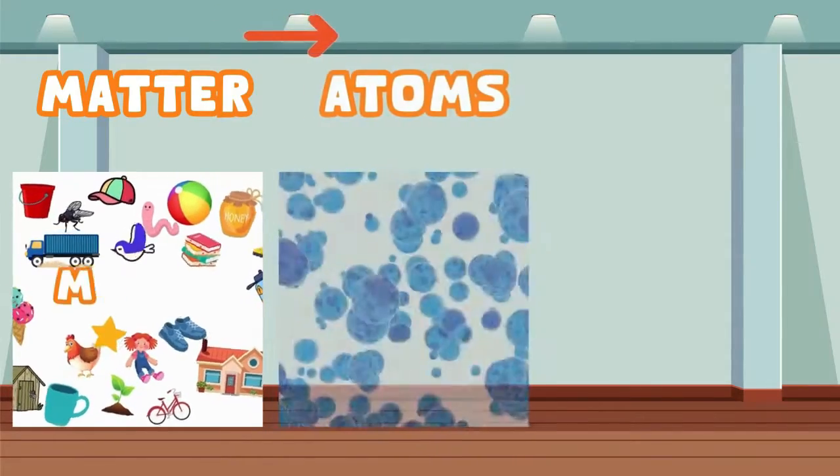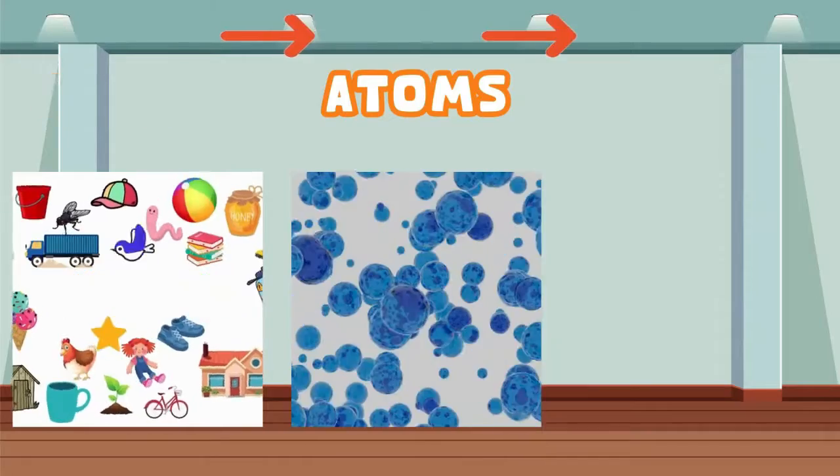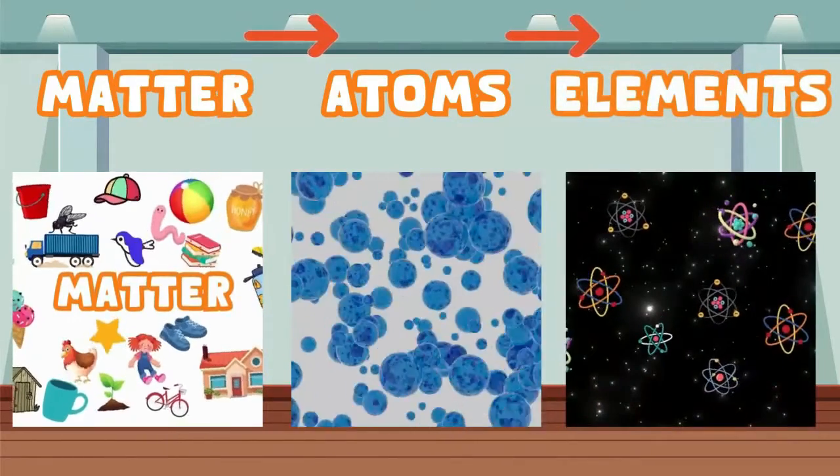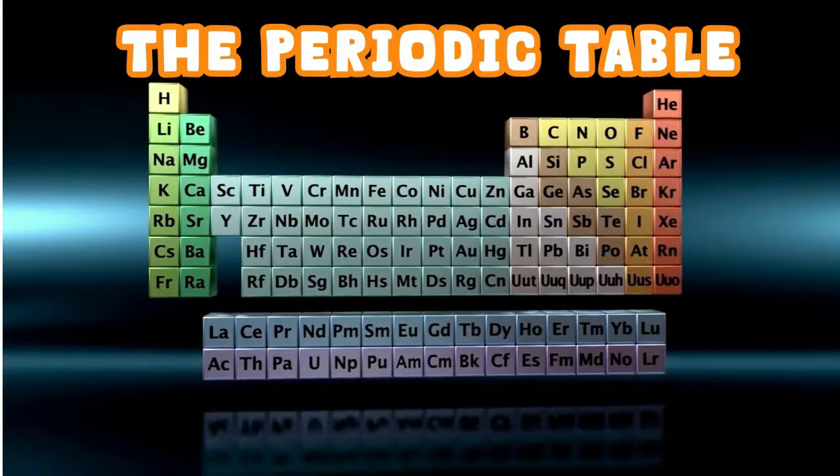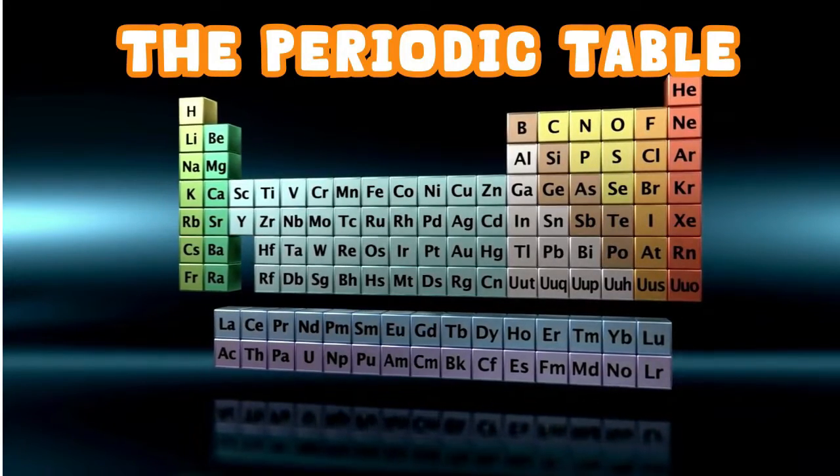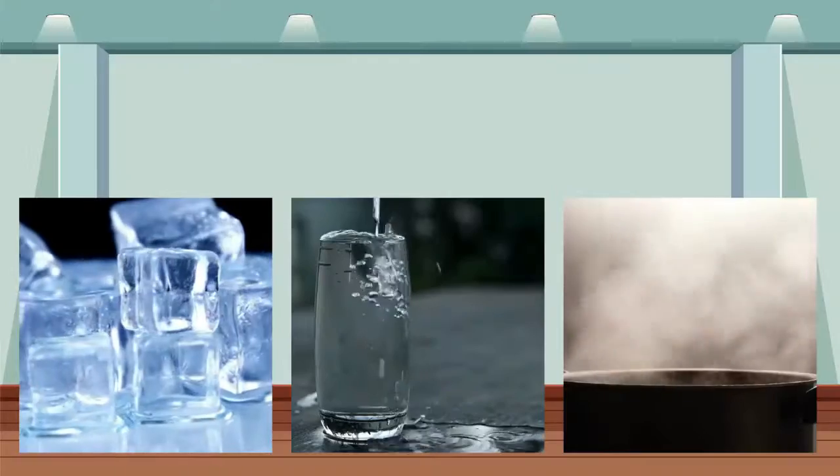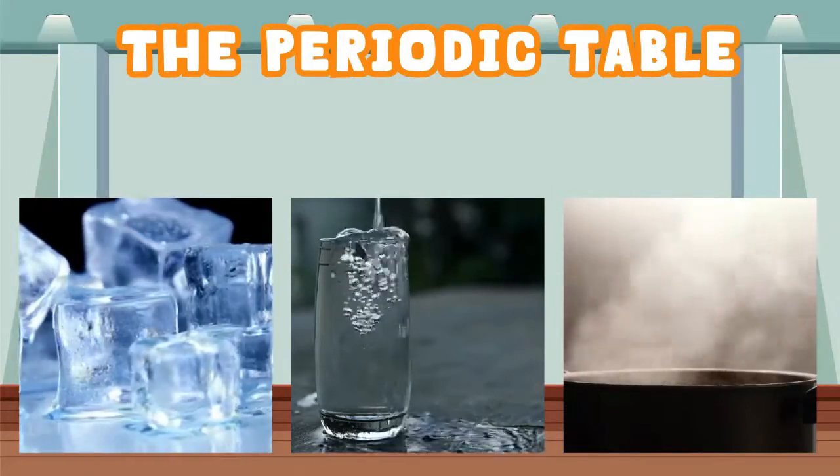Inside matter there are different kinds of atoms, and we call them elements. The periodic table is a list of all the possible ingredients in the world that everything in the entire universe is made out of. Every single solid, liquid, or gas in the world is made up of different combinations of elements from the periodic table.